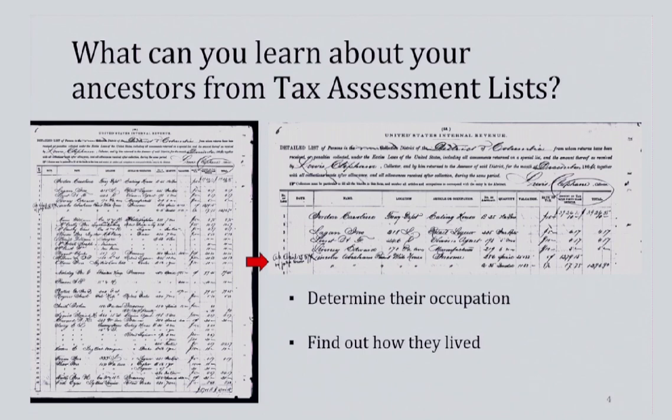These lists can help genealogists fill in some of the details of their ancestors' lives. The list may be able to give more insight into an individual's occupation either by stating it outright, as the list does for President Abraham Lincoln, or with other context clues, such as where he lived — like the White House — or the item being taxed. With this information, you may be able to seek out even further records in state or local government archives, churches, or business records.